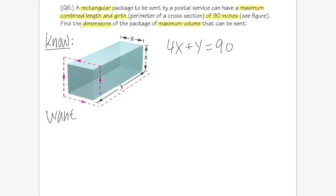What we want to know is the maximum volume of this box. The volume of this box is just the area of the cross section, which is x times x, that's x², and we multiply by the y.